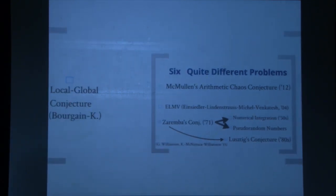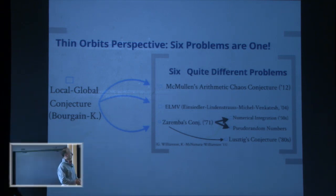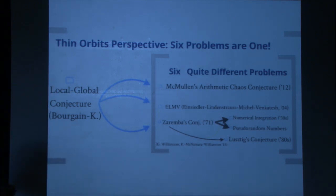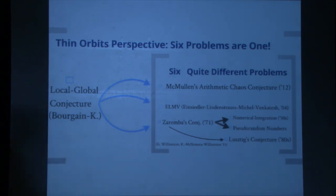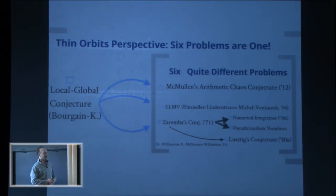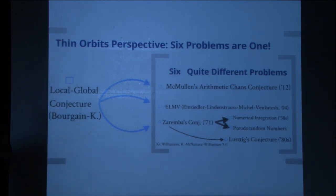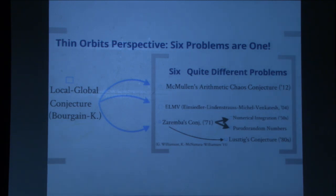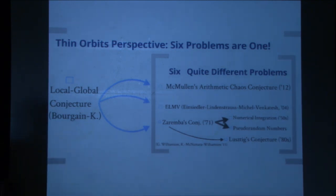The thin groups picture is that all of these six problems are one and the same. In joint work with Jean Bourgain, we formulate a local-global conjecture in thin orbits which has all of these three big problems as consequences. We can't solve this conjecture, so that doesn't help you. But even partial progress can have some consequences.